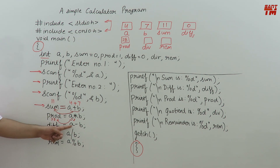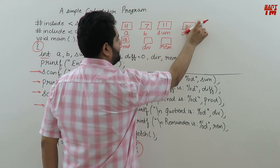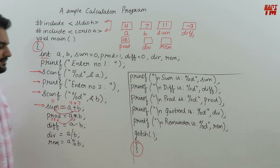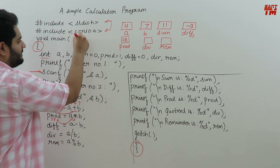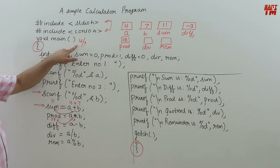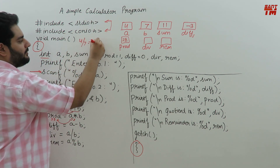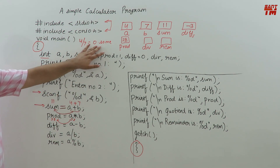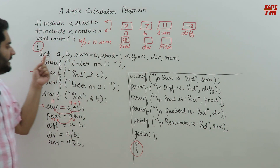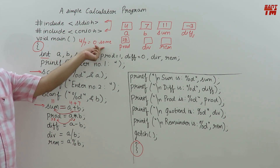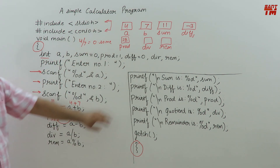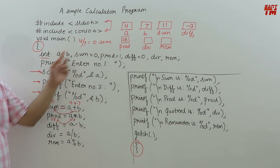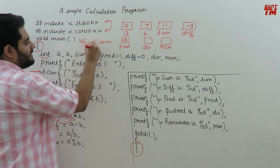Difference equals A minus B. A is 4 and B is 7, so 4 minus 7 is minus 3, and difference is assigned minus 3 — 0 is replaced with minus 3. Division equals A divided by B: 4 divided by 7 gives 0 point something. But we have declared division as integer type. A real number cannot be stored in an integer — only the integer part is kept.